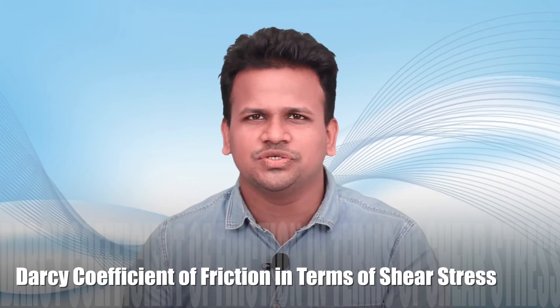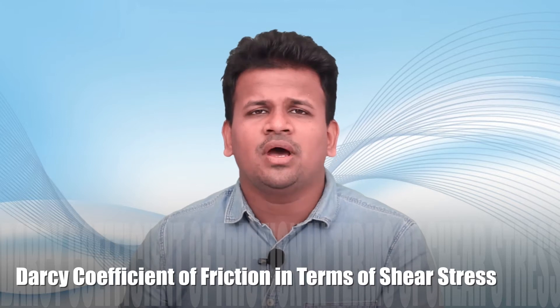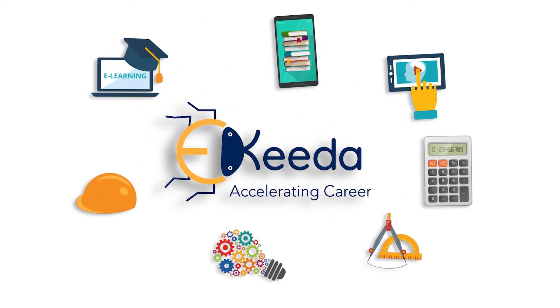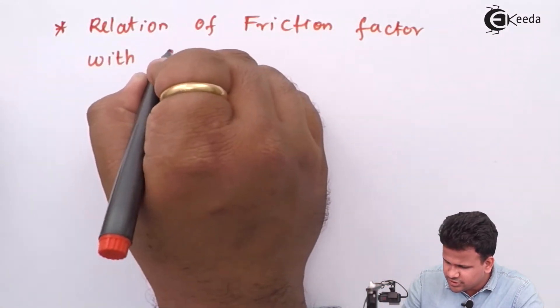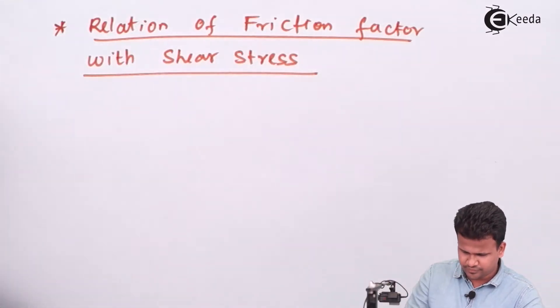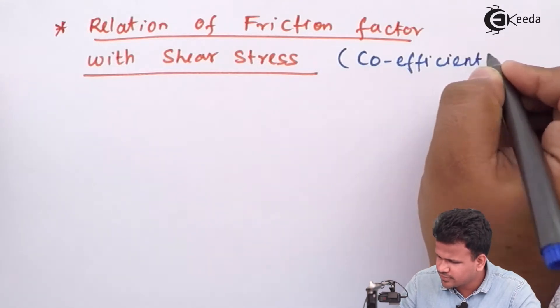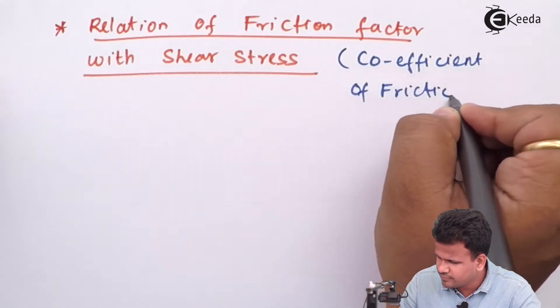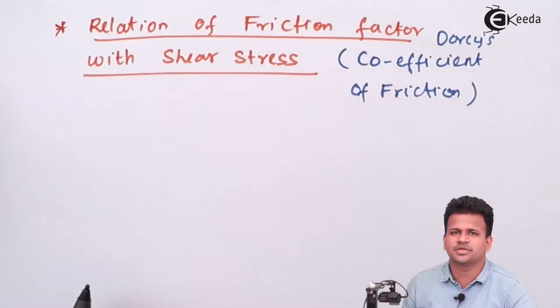We have seen in the previous section the head loss due to major and minor losses. Now we are going to study the relation of friction factor — the coefficient of friction in Darcy's equation — with shear stress. Friction factor is also called the coefficient of friction, but specifically this is Darcy's coefficient of friction. Friction factor and Darcy's coefficient of friction are the same.